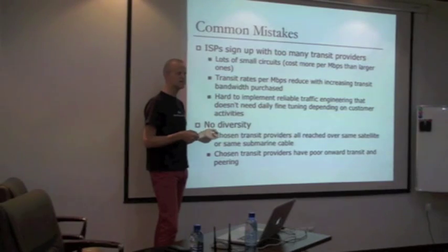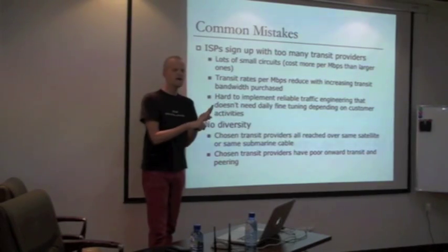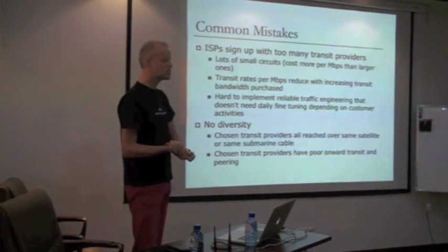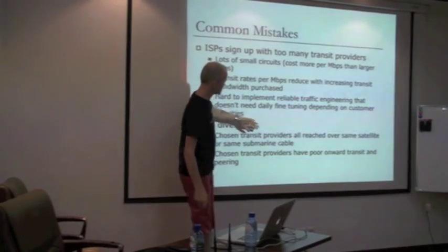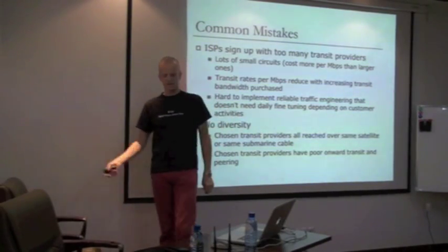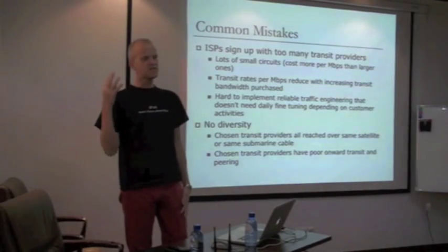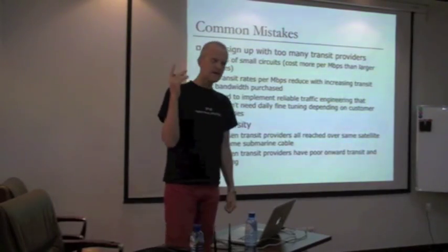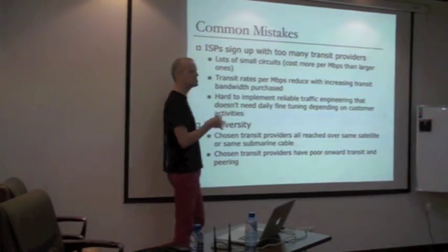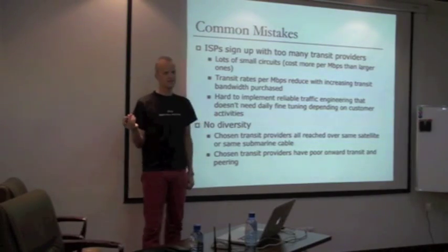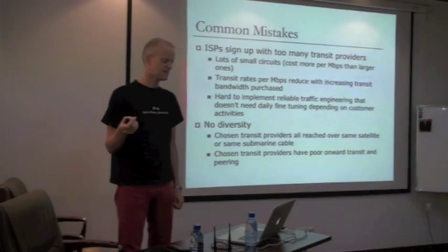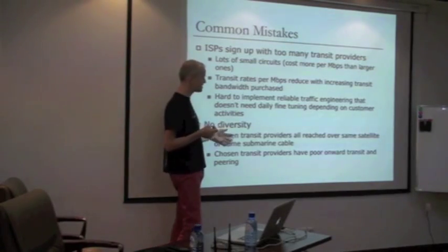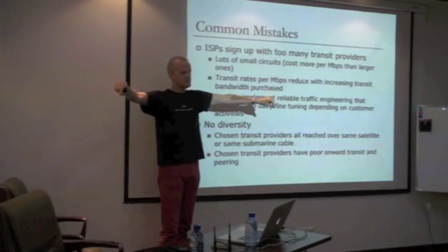It becomes very hard to implement reliable traffic engineering that doesn't need daily fine-tuning with lots of little providers. All these little circuits may fill up - how do you do load balancing? You'll be forever sitting there trying to adjust it, and you'll never get it perfect - morning, noon, night. The other mistake people make is no diversity - they sign up to upstream ISPs but they're all over the same transmission link. Make sure it's different transmission. People doing things over the same satellite is common in the Pacific Islands. A few years ago, one of those satellites fell out of the sky and many nations lost all their internet and telecommunications. It took several months before they could get another connection.